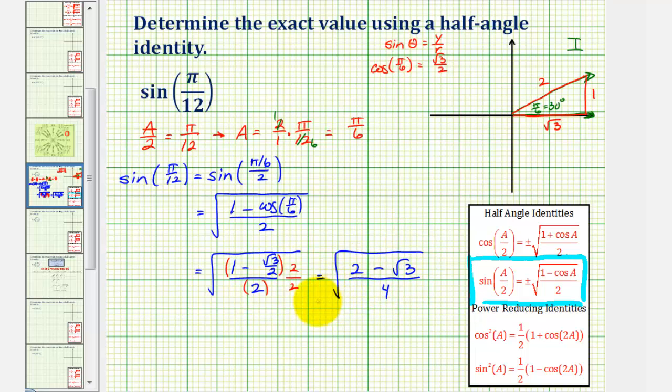And now because we have a fraction under the square root, we can write this as the square root of the numerator over the square root of the denominator, which is the square root of four. And the square root of four simplifies to two. So this leaves us with the square root of two minus square root three divided by two.